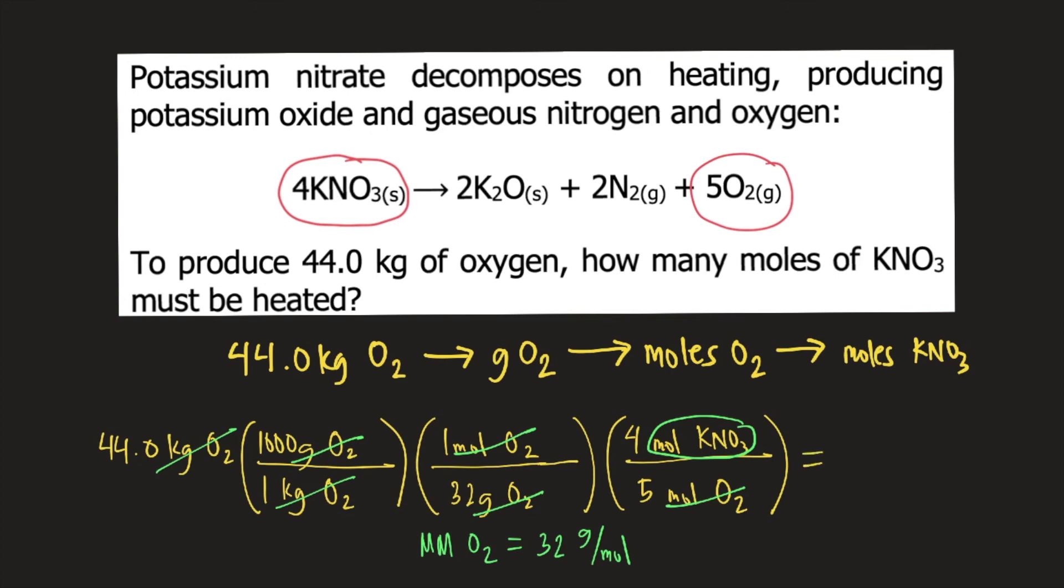If you solve this whole thing and plug the numbers into your calculator, this equals 1100 moles of KNO3. This is the answer to the question.